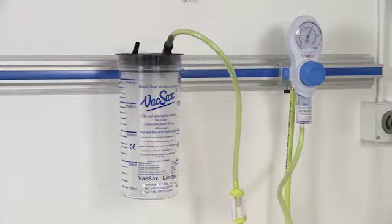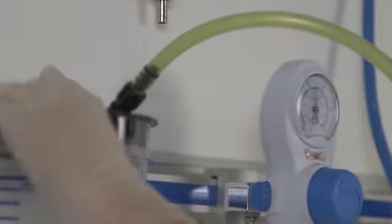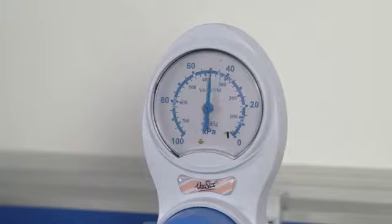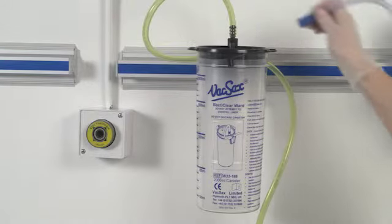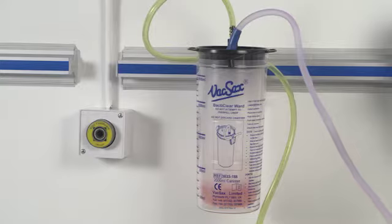Place your finger over the patient port located on the lid of the liner, ensuring a vacuum is present. Connect the patient tubing to the patient port. The suction unit is now ready for use.